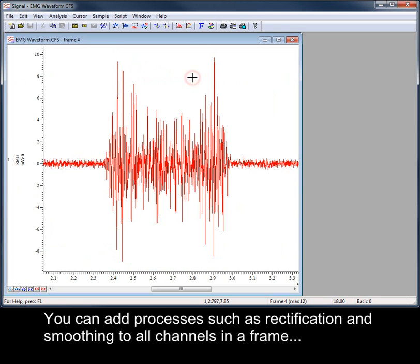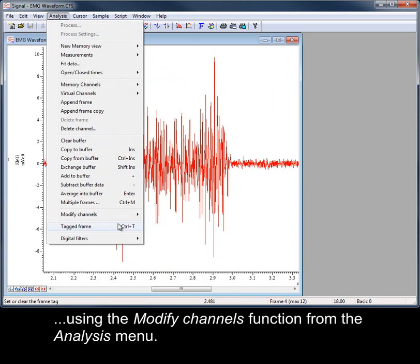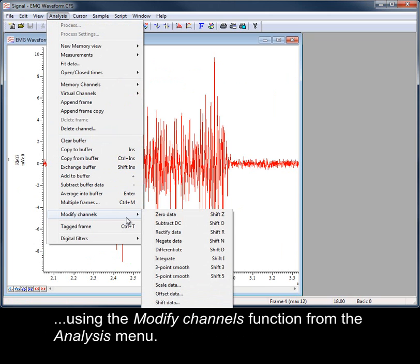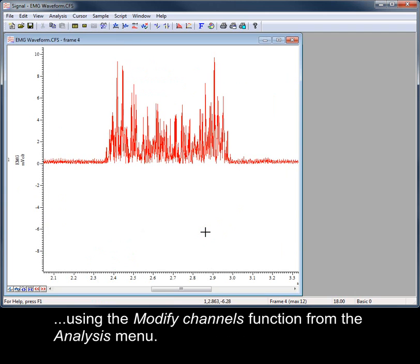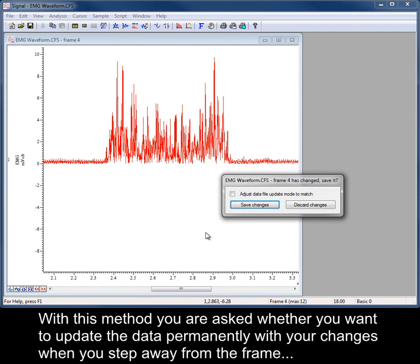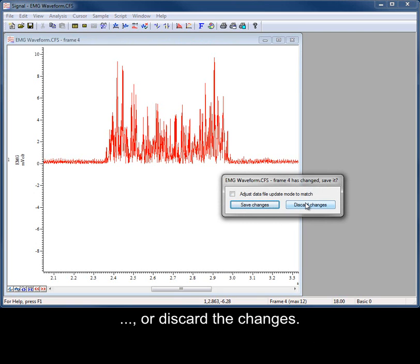You can add processes such as rectification and smoothing to all channels in a frame using the Modify Channels function from the Analysis menu. With this method, you are asked whether you want to update the data permanently with your changes when you step away from the frame, or discard the changes.